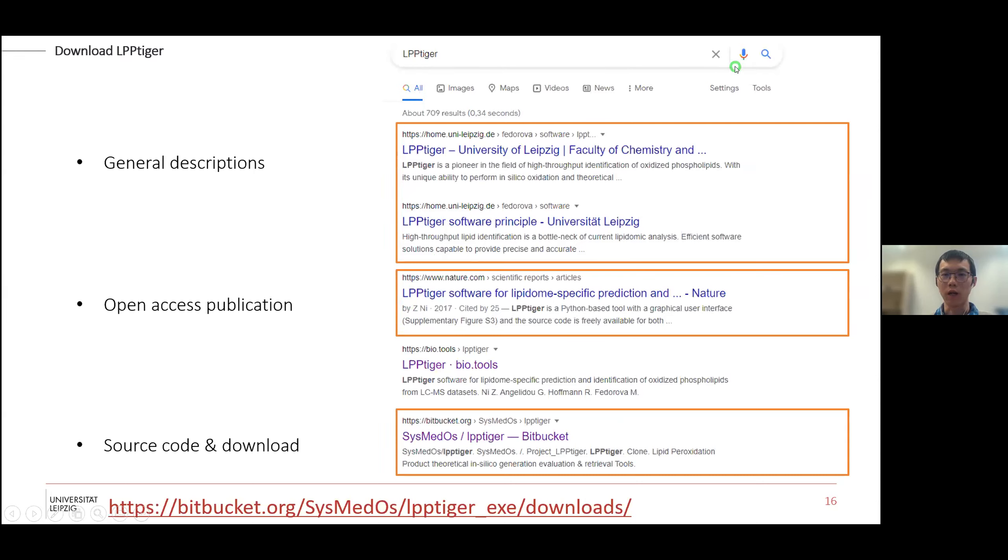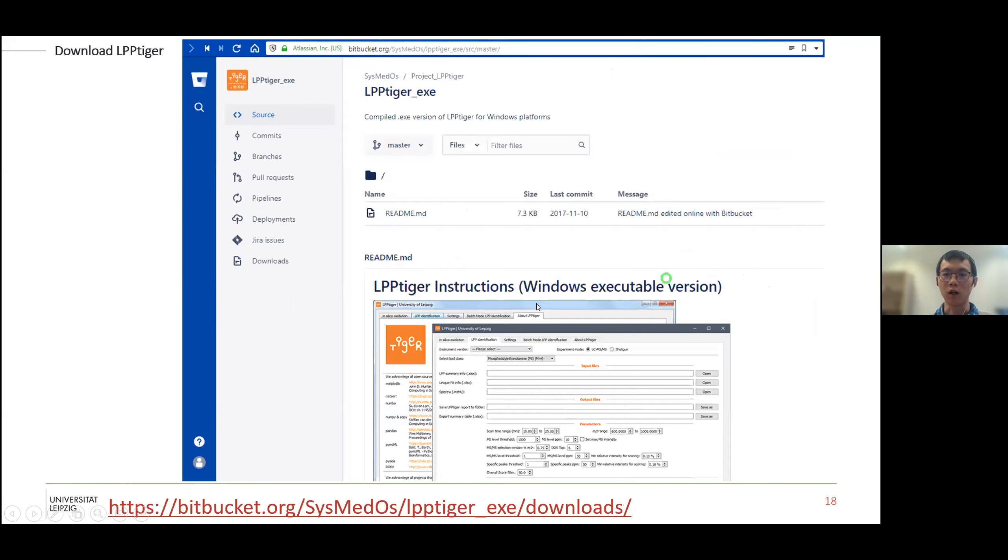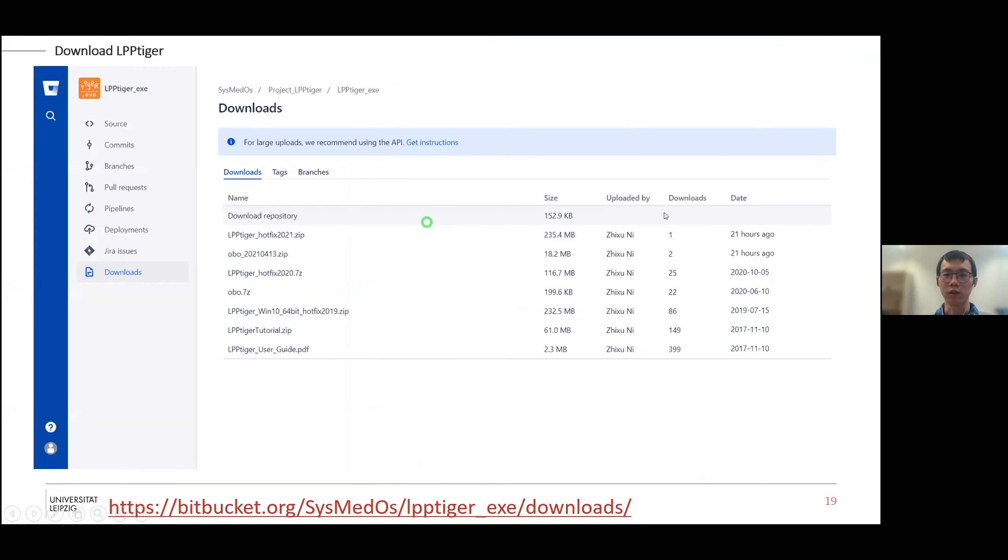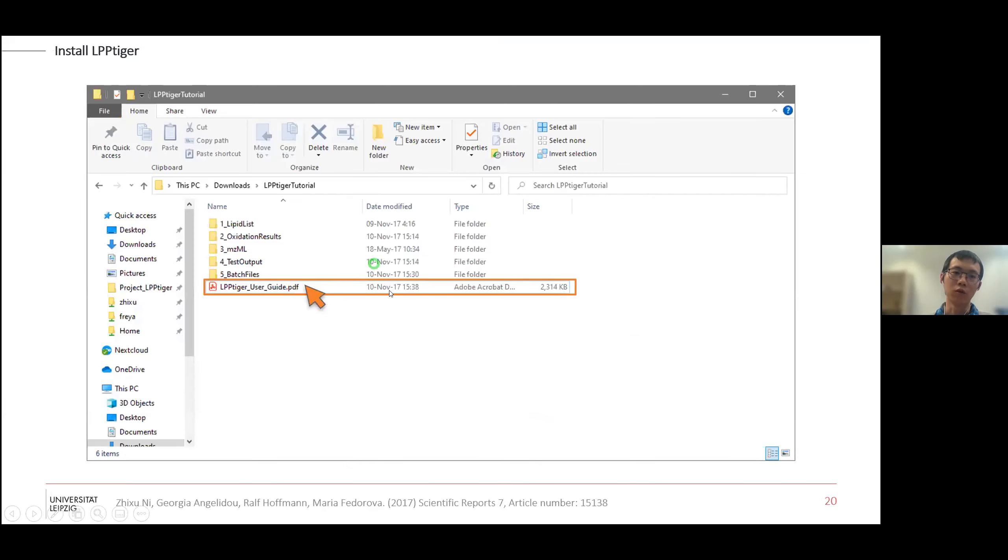So when you search LPP Tiger from Google, you can get these major links. If you want to download it, you go to the SourceForge link here, and then you go to the source code website. For today, as our tutorial, we are using mostly public Windows from the researchers. Then you click here and come to this Windows version page. Click here for the download page, and then here are the files for you. But today I've prepared the version for this spring school and the tutorial package and the user guide.